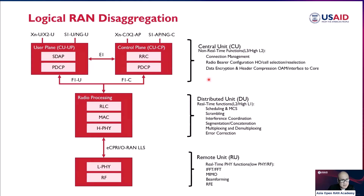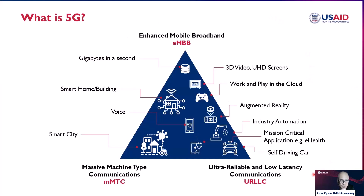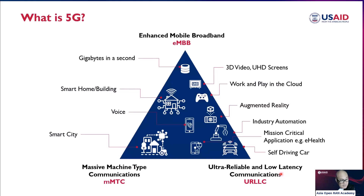Why do we need to separate this? Remember, we have different use cases in 5G: eMBB, URLLC, and mMTC. These use cases require different architecture structures. Especially for URLLC, where there is a need for low-latency communication — we need a fast network response. If your baseband or cell site is located 10 kilometers from you, even at the speed of light there is still a noticeable delay. So to reduce latency further, we need to move some part of the network closer to the users.